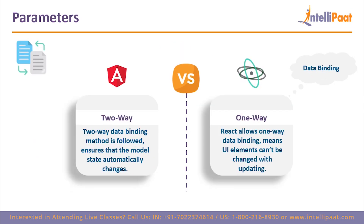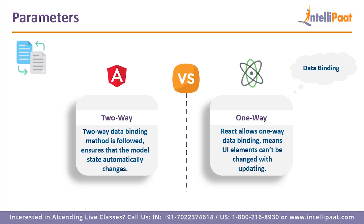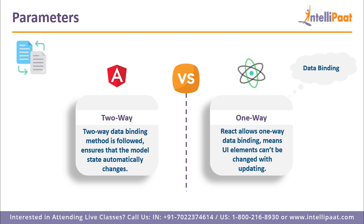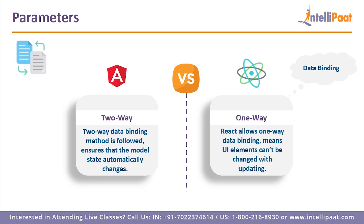Now let's look at data binding. Data binding ensures that whenever data changes, any component of your view displaying that data updates automatically. Angular uses two-way data binding, meaning when you change the data it is reflected in the UI, and when the user changes data in the UI, that change is also reflected in the code.